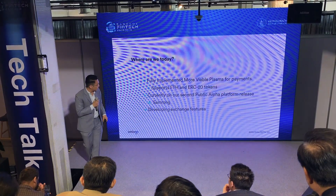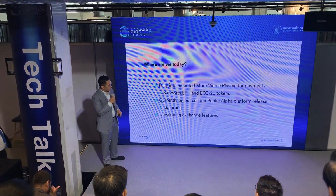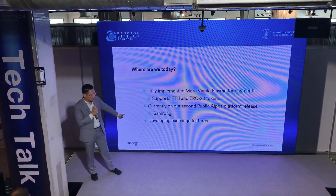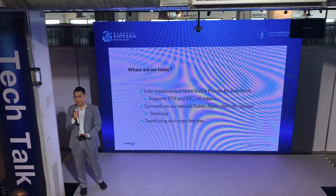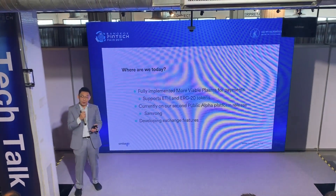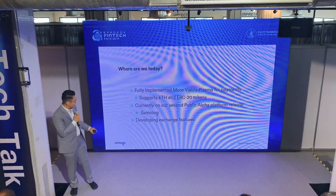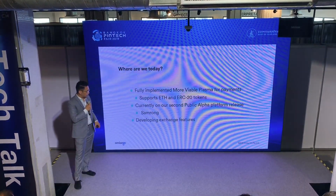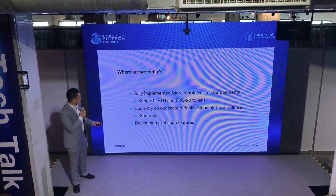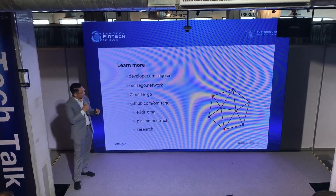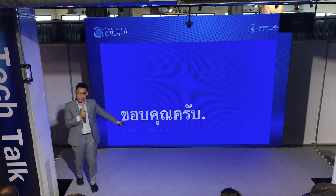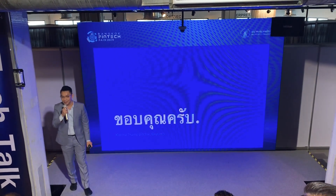Where are we today? We've fully implemented More Viable Plasma for payments, and it supports Ethereum and ERC20 tokens. We're currently on our second public alpha platform release, which we call network Samron. We invite all developers and partners looking to play around with or integrate our network to come and try this out. We're also developing our exchange features. If you want to learn more, you can go to developer.omisego.co. I'm Kasima Tharnpipitchai, and you can find me as Kasima pretty much everywhere. Thank you.